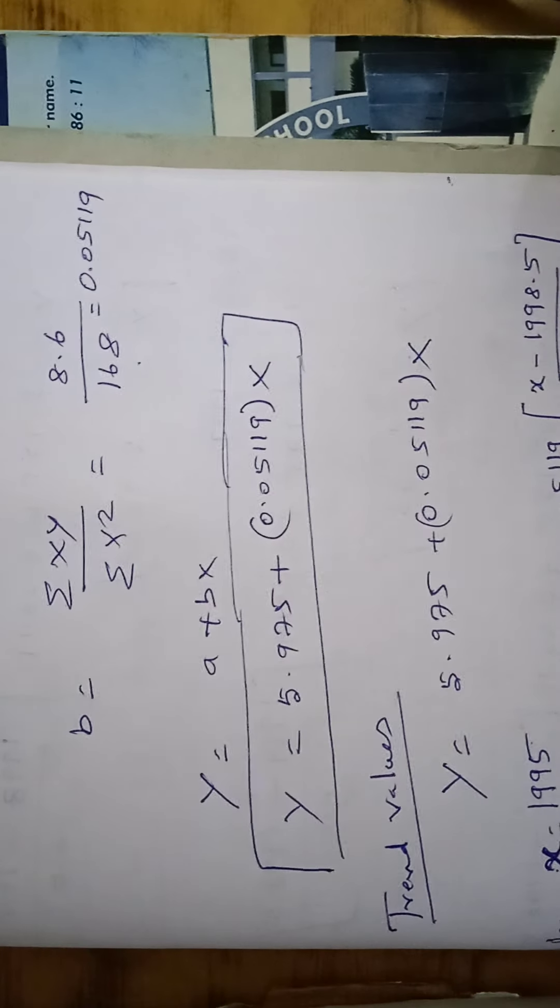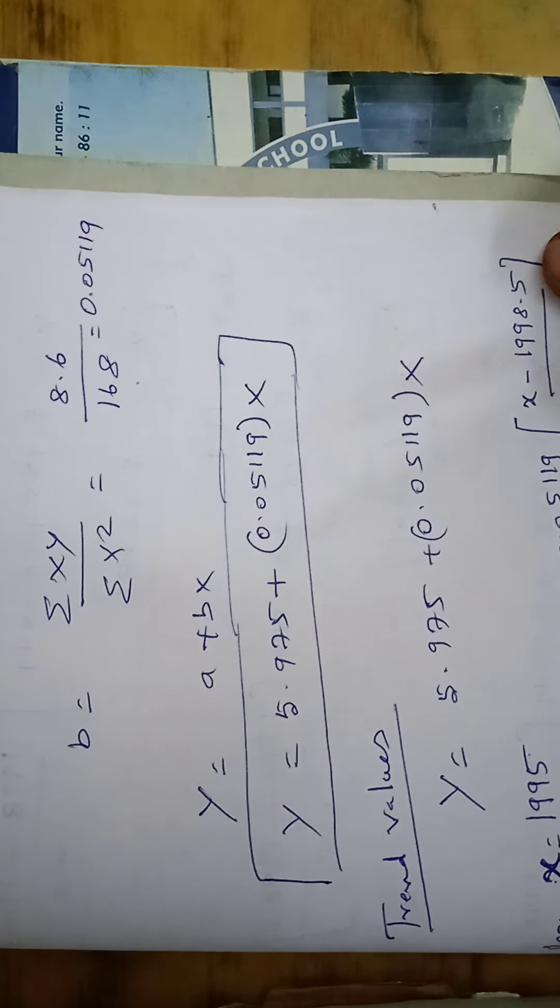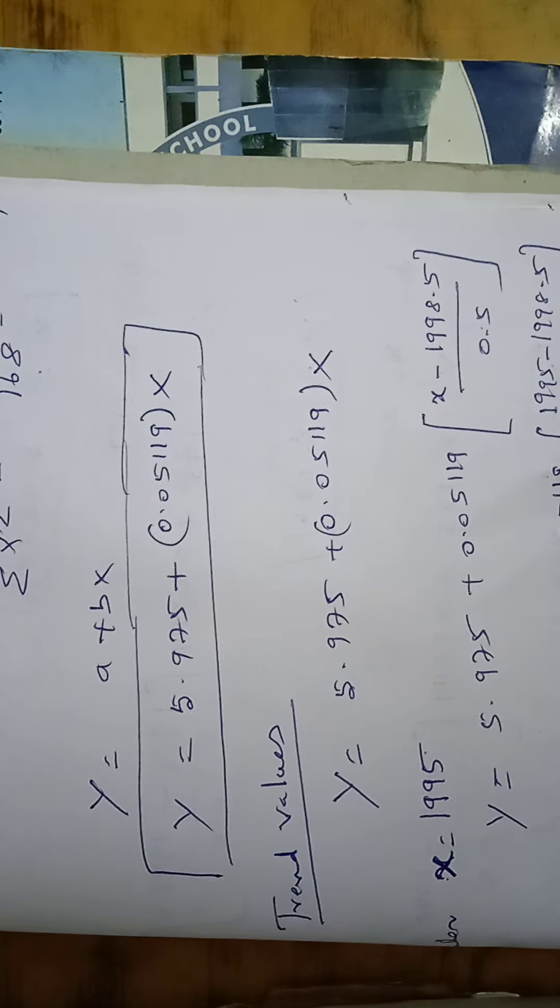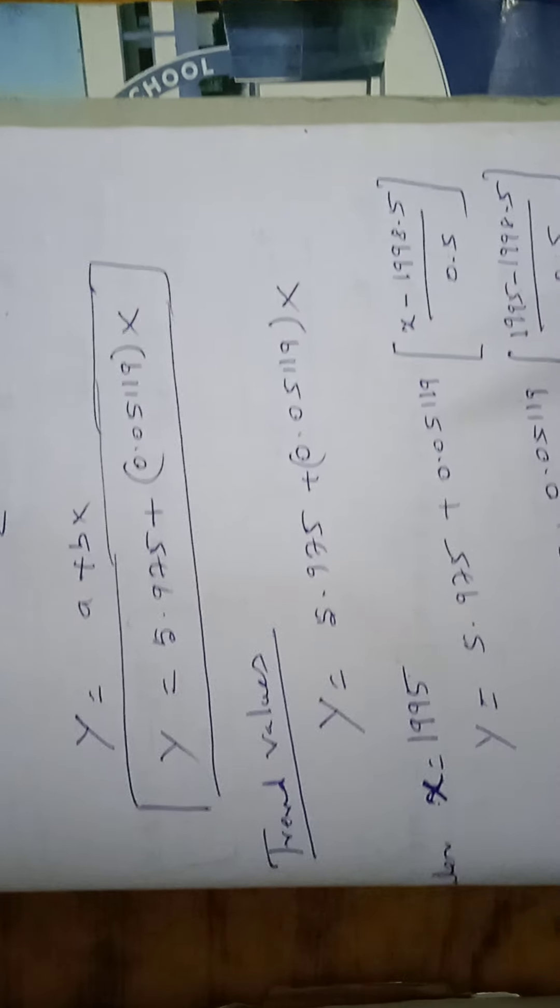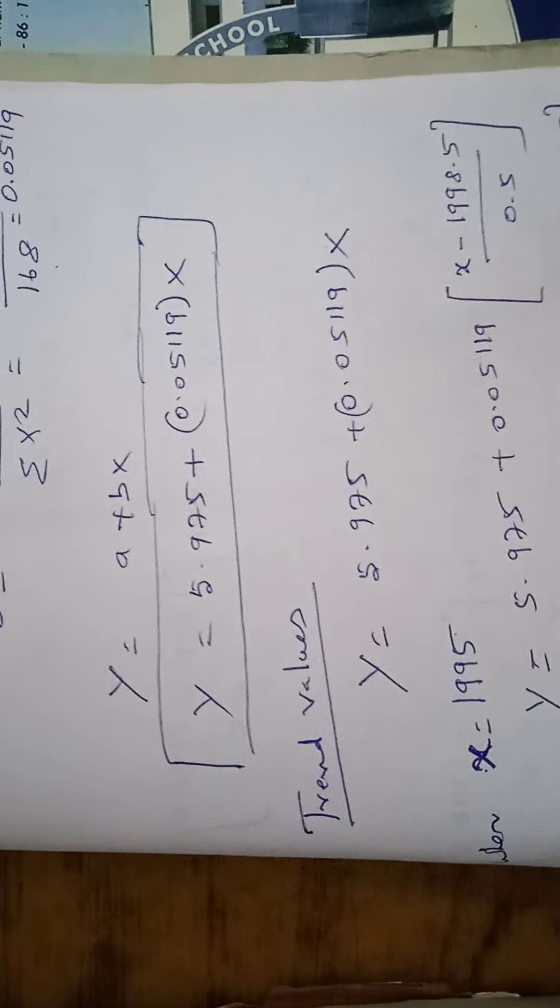Next we have to take B value. It can be taken as B equal to Sigma XY by Sigma X square. So 8.6 by 168 is 0.05119. Y equal to A plus BX. So straight line trend equation is Y equal to 5.975 plus 0.05119 X.